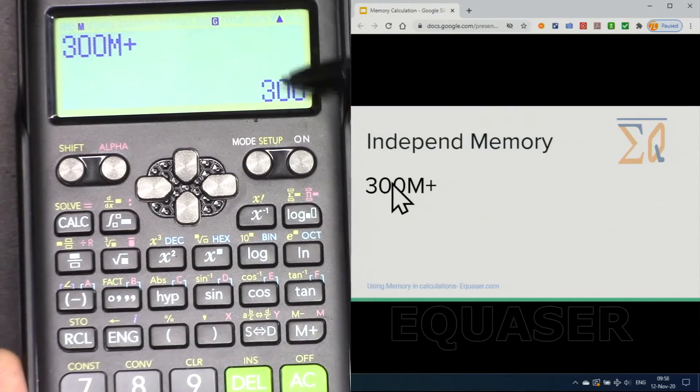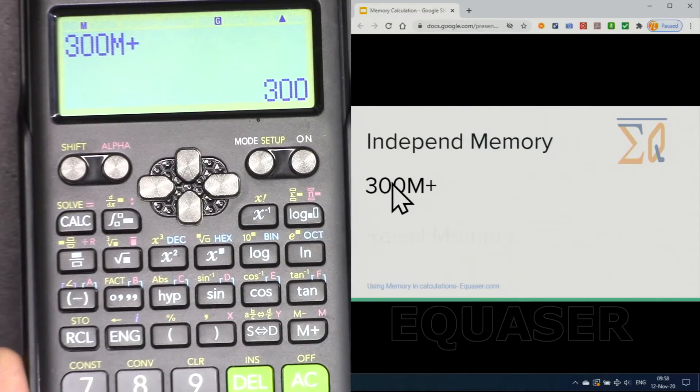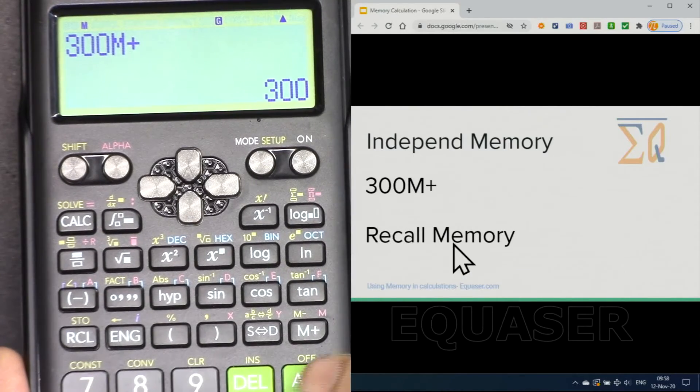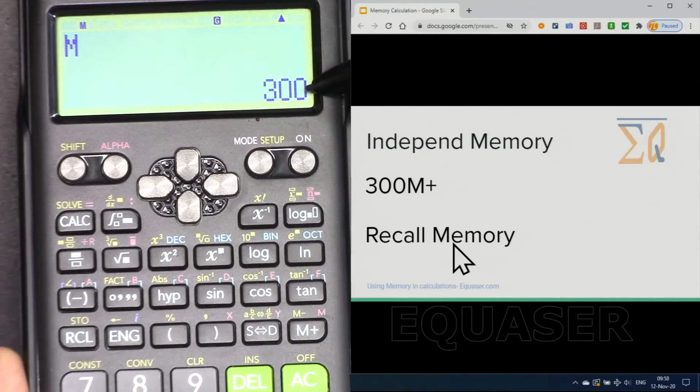This means add it on top of memory. Whatever before it was 0, now we have added 300 to 0 and M appeared here. And to recall it press recall and M as before and this is a value.